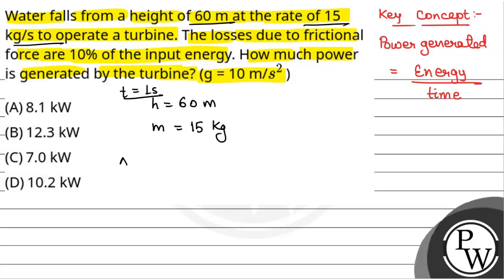So energy that is being produced, delta E, will be equal to loss in potential energy. This is the energy being produced and that will be due to loss in potential energy, as the total mechanical energy is conserved. Now only 90% of the potential energy is used to produce the energy, as 10% is lost due to frictional force.